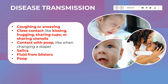Regarding disease transmission, the virus can transmit through various routes. One important route is coughing or sneezing — similar to how COVID spreads. Close contact with an infected person, such as kissing or hugging the baby, sharing cups or utensils, can lead to transmission. Saliva from the child can also transmit the virus, since kids drool. Therefore, disinfecting areas where the child has been is very important.